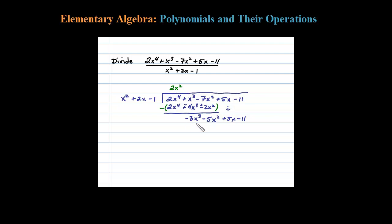Let's do it again and try to match the leading term. What times x squared is negative 3x to the third? We choose negative 3x. Negative 3x times x squared is negative 3x to the third. Distributing: negative 3x times 2x is minus 6x squared, and negative 3x times negative 1 is plus 3x. After which you subtract, changing all those signs, so negative 3x cubed plus 3x cubed equals 0.